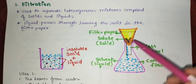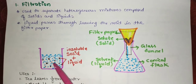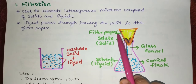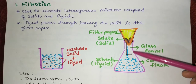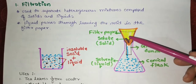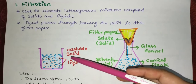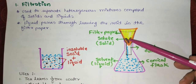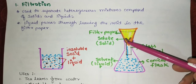As you can see in the diagram, whenever an insoluble solid is mixed in a liquid, we separate it by filtration. We use a conical flask and add a filter paper with a glass funnel. We pour the solution through. After some time, all the insoluble solid remains on the filter paper while the water passes through, leaving the solid portion behind.